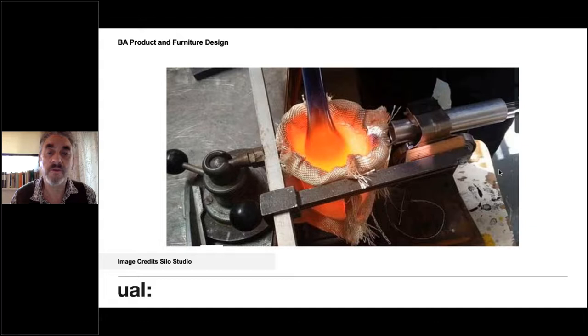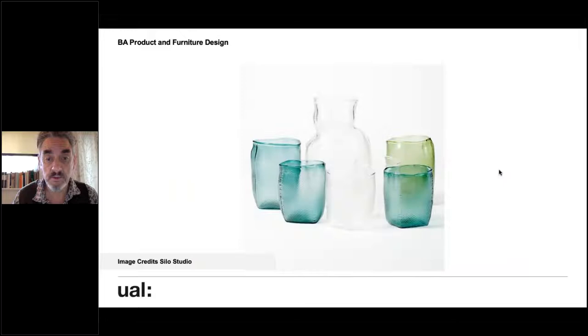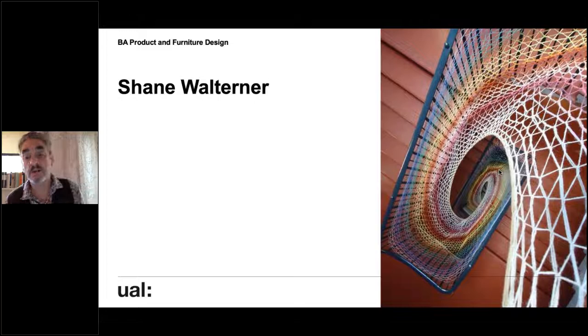She works with a studio called Studio Silo and they work on a lot of different material objects — lots of functional objects using interesting material approaches. For instance, this is a way of blowing glass into a heat-proof fabric bag, which creates this tableware, so you get the kind of seams appearing.